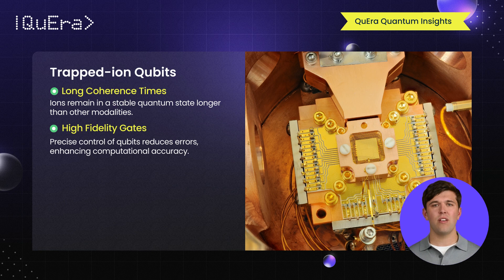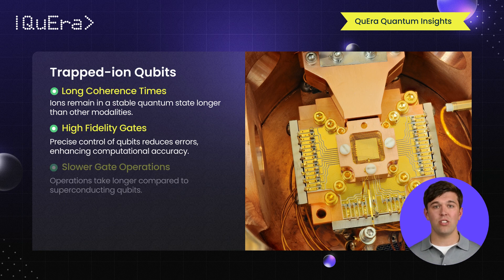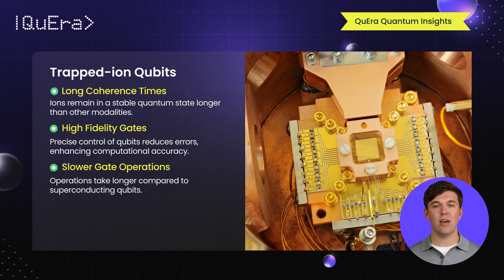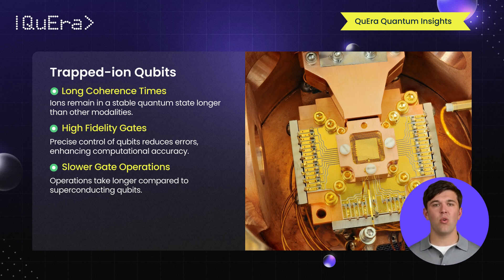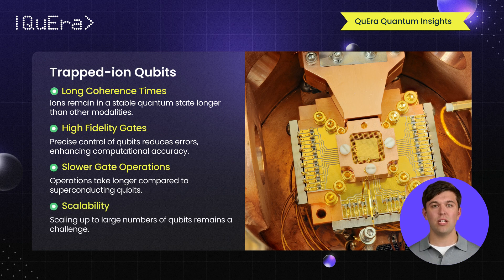However, their gate operations are slower compared to superconducting qubits, which may limit their practical use in certain applications. Companies like IonQ and Quantinuum are leading the development of this technology, although scaling up to large numbers of qubits remains a technical challenge.